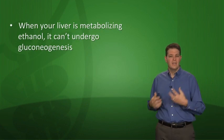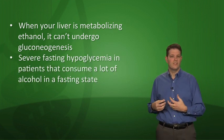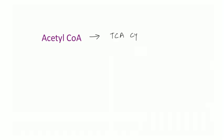The bottom line: when your liver is metabolizing ethanol, it can't perform gluconeogenesis, and that can cause severe fasting hypoglycemia in patients who consume a lot of alcohol in a fasting state. As for acetyl-CoA, it's a really important molecule. Your body can put it to many uses: it can enter the TCA cycle, serve as the starting point for fatty acid synthesis, cholesterol synthesis, and ketone synthesis.